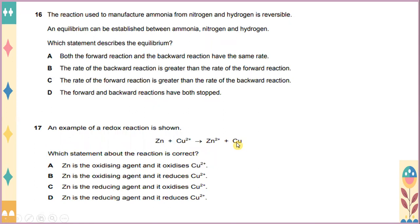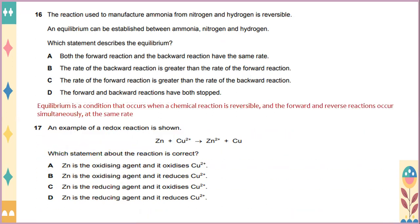The reaction used to manufacture ammonia from nitrogen and hydrogen is reversible. Which statement describes the equilibrium? Equilibrium is a condition that occurs when a chemical reaction is reversible. And the forward and reverse reactions occur simultaneously at the same rate. So the answer will be A. Both the forward reaction and backward reactions have the same rate. An example of a redox reaction is shown. Which statement about the reaction is correct? Cu2+ is the oxidizing agent, whereas Zn is the reducing agent. And it reduces Cu2+.